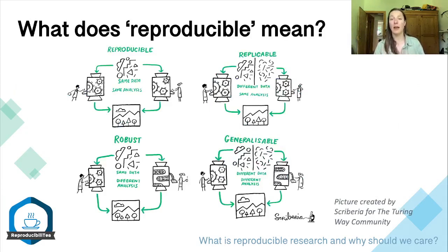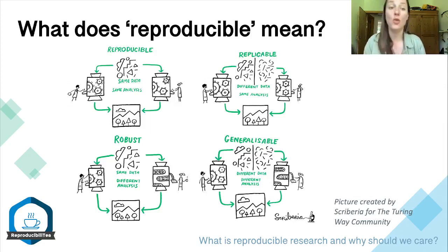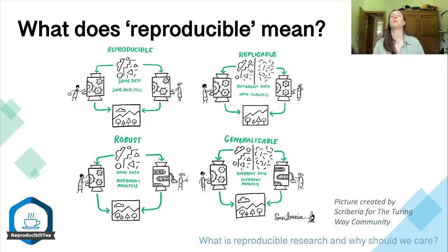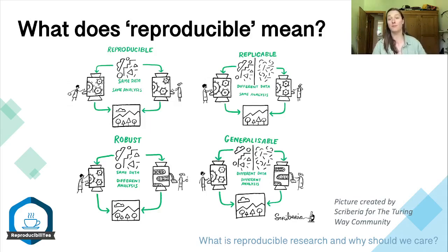This graphic depicts it very well. In the top two panels, you can see that reproducible research basically means that someone takes your data and is able to run the same analysis you did to produce exactly the same result. Whereas replicable research means they can do that with a different data set — same analysis, similar result, different data. Reproducibility takes effort across the entire research process, and that should in turn make your work more replicable.